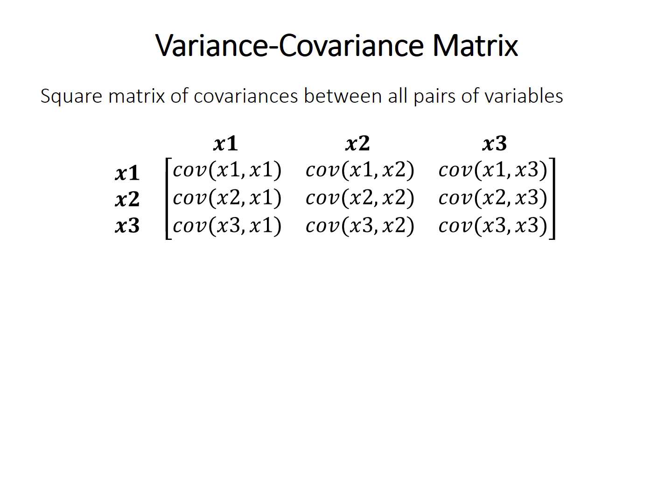The variance-covariance matrix is a square matrix, which means it has the same number of rows and columns. This one is 3 by 3, and it contains the covariances between all pairs of variables. So x1 might be oxygen measurements, x2 is pH, x3 is chlorophyll, for example. We have the covariance of x1 with itself, the covariance between x1 and x2, and so forth.